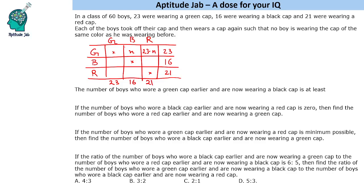Of the red-cap wearers, 23 minus n are now wearing green caps. For the column total to equal 21, the red-to-black entry becomes n minus 2. For the black cap column, in order to cancel n, the red-to-black entry is n minus 2 and the green-to-black is n, making the total 16.